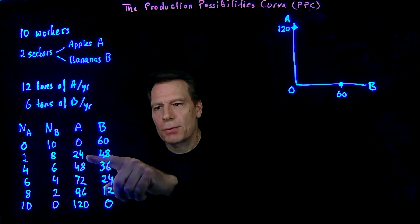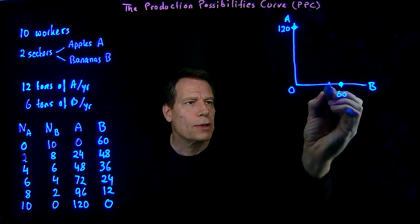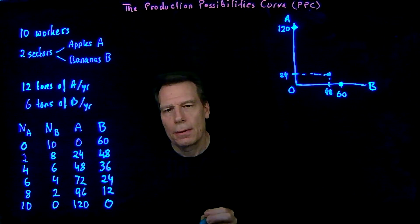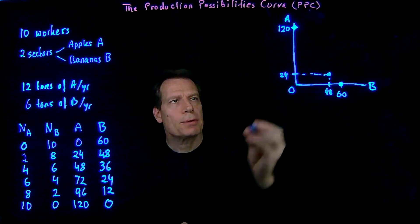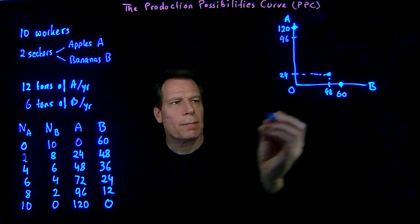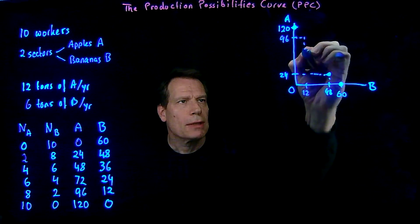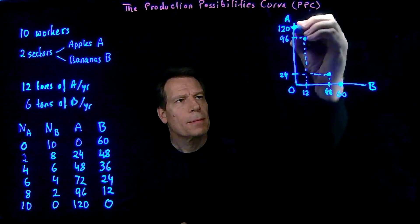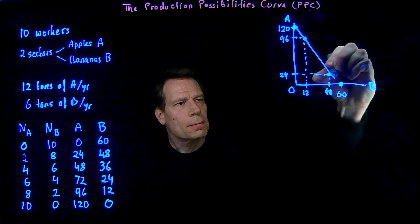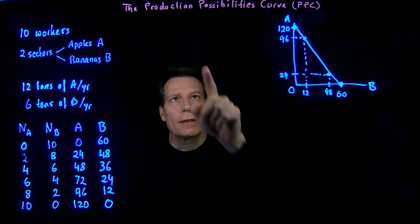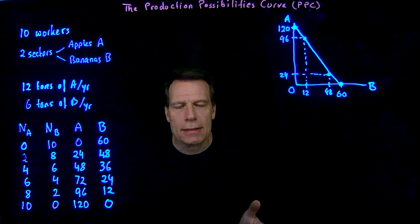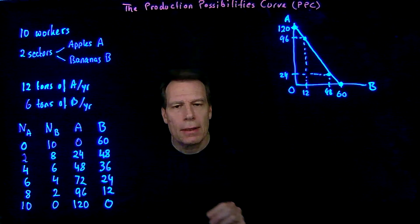If we looked at the second row, we'd be producing 24 apples and 48 bananas — so 48 bananas and 24 apples, a point like this. Or the second-to-last row, we'd be producing 96 apples and 12 bananas, which would be a point like this. And we could plot the other points, but all of those points would lie on the same line connecting the endpoints. That line is what we call the production possibilities curve, or the PPC. It illustrates all the possible production levels that this economy could reach as we allocate workers across the apple and banana sectors in different ways.